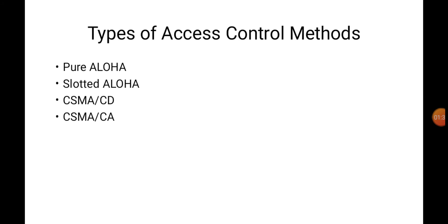For that purpose, we have four mechanisms in computer networking: Pure Aloha, Slotted Aloha, CSMA/CD, and CSMA/CA. The first three protocols are for wired communication and CSMA/CA is used for wireless communication. CSMA/CD stands for Carrier Sense Multiple Access with Collision Detection, and CSMA/CA stands for Carrier Sense Multiple Access with Collision Avoidance. We will see them one by one.